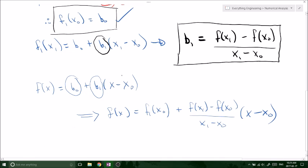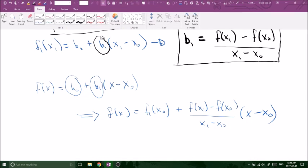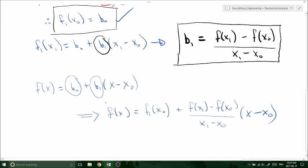We can say f of x equals f1 of x naught plus f of x1 minus f of x naught over x1 minus x naught times x minus x naught. A bit of a tongue twister, but this is the general form of Newton's linear interpolation.